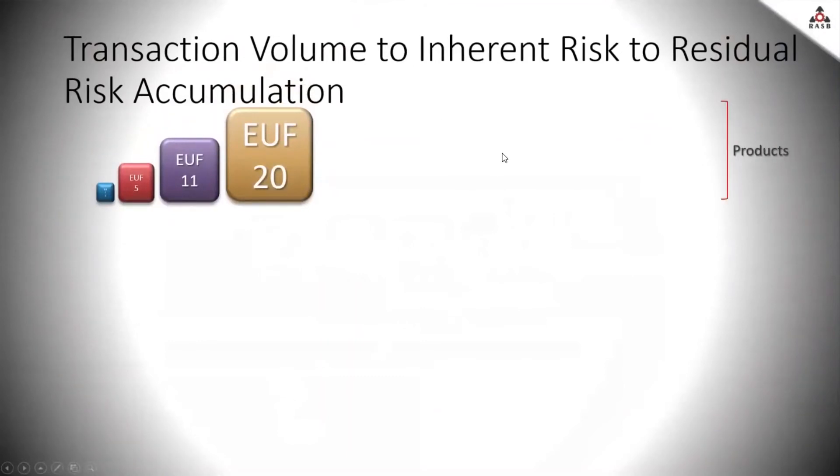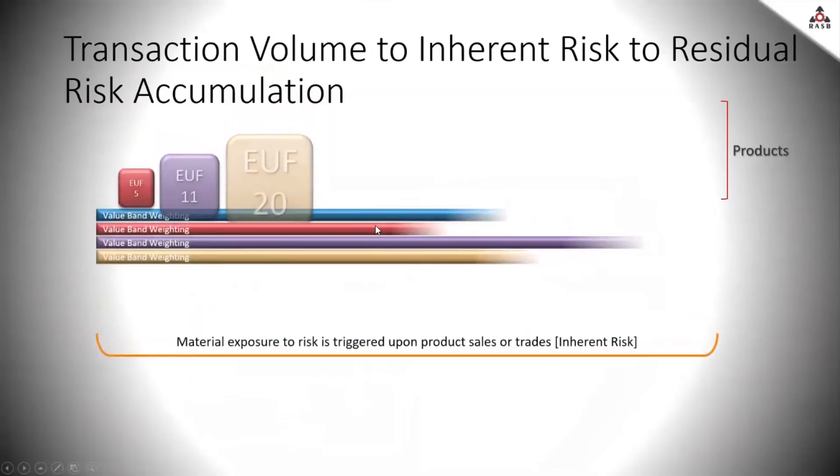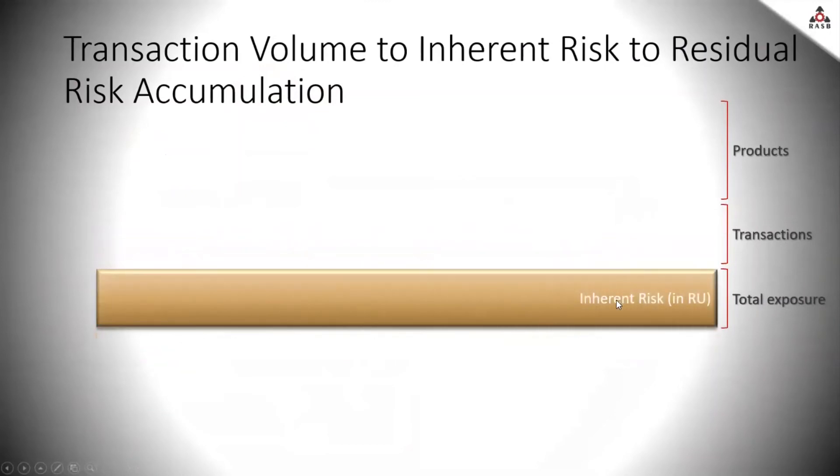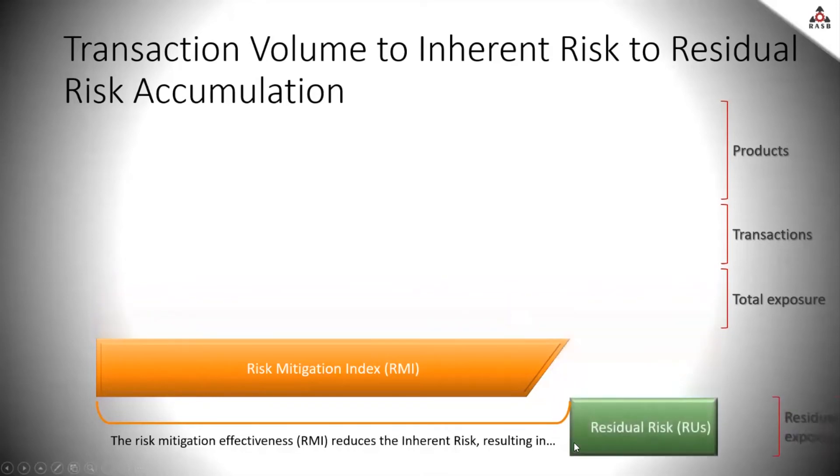So again, we have the products with their risk profile expressed in EUFs, which through transaction fall into various value band weightings, which of course dissolve in this inherent risk metric, which combined with the risk mitigation index calculated through the system, basically results into the residual risk - the residual exposure to risk accepted by the organization.